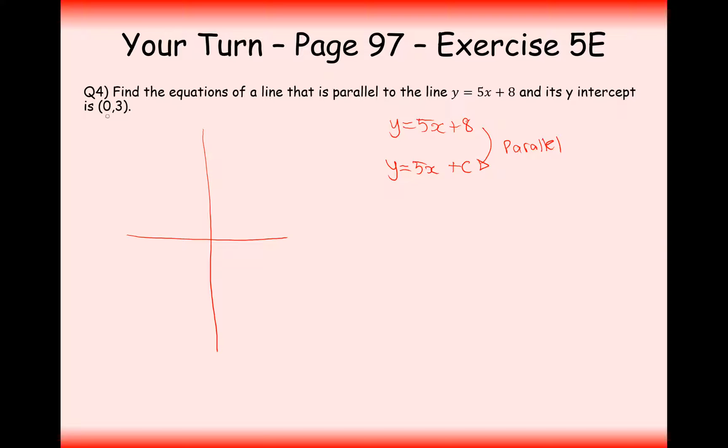We also know it crosses the coordinate 0, 3. What we can do here is plug in the coordinate 0, 3 and we get c is the value 3 and that makes sense because it crosses the y-axis and it's the y-intercept. So the equation of this line here is y equals 5x plus 3 and it's going to look something like that.